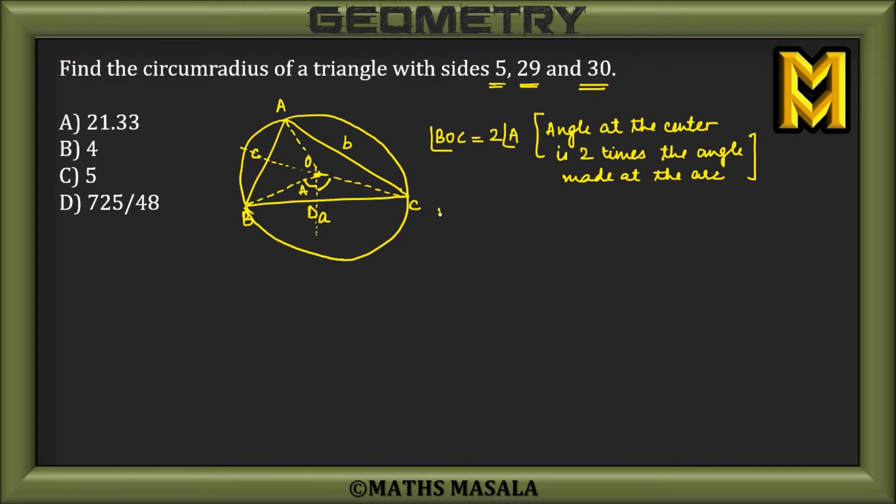be equal to angle A. Now, this complete length BC is of length a, so BD would be a by 2 because this line is the perpendicular bisector. So BD is a/2, and OB